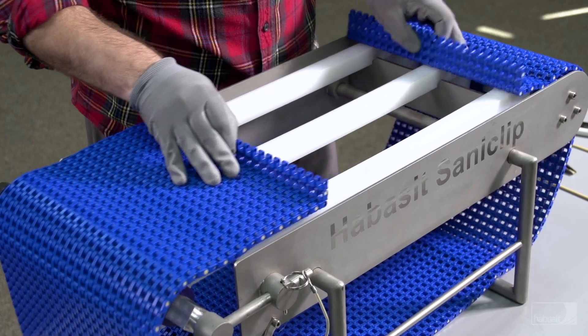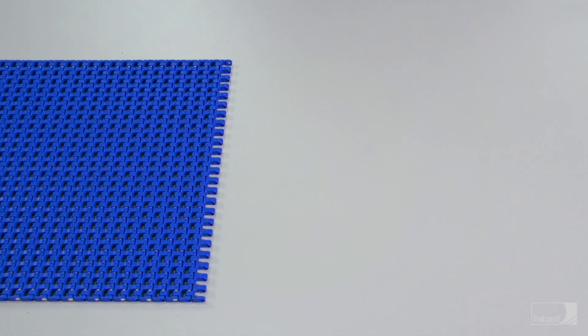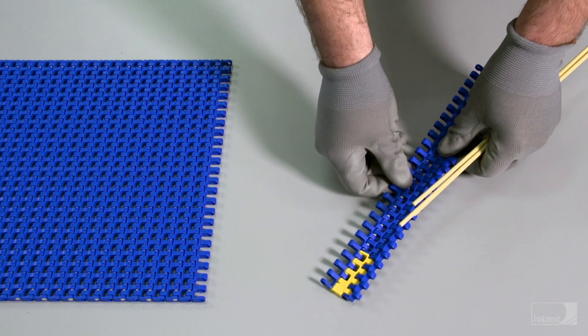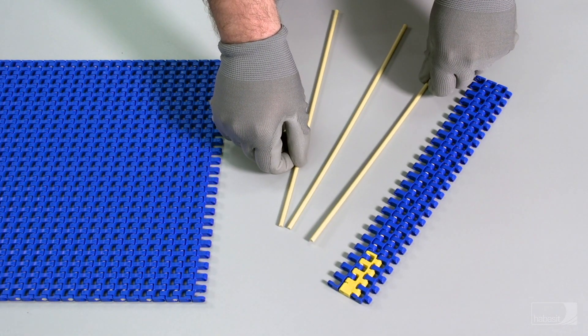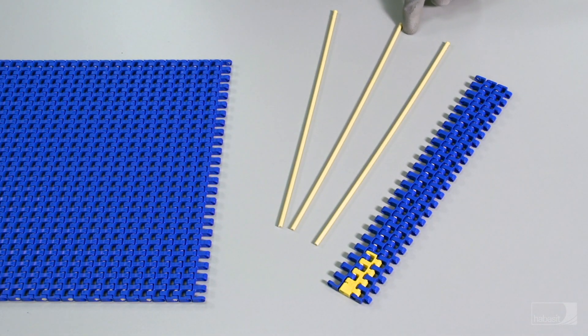Remove the belt from the conveyor and lay one end flat on a surface. Your Santa Clip Retrofit Kit is customized for your specific belt and includes the Santa Clip pre-installed into a set of modules along with spare rods.